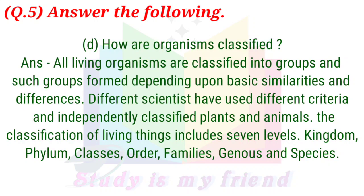D. How are organisms classified? Answer: All living organisms are classified into groups, formed depending upon basic similarities and differences. Different scientists have used different criteria and independently classified plants and animals. The classification of living things includes seven levels: Kingdom, Phylum, Class, Order, Family, Genus, and Species.